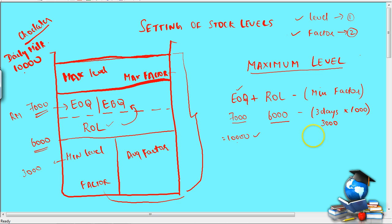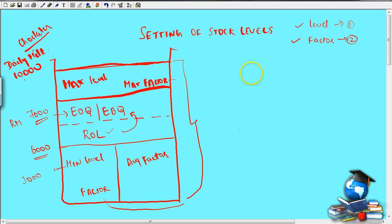So the formula will be economic, instead of economic ordering quantity I am saying reorder quantity, plus reorder level minus minimum consumption. That is a factor, consumption into minimum reorder period. Reorder period is what? Time. That is all. Minimum maximum level is over. Now let us see what is the formula for reorder level.